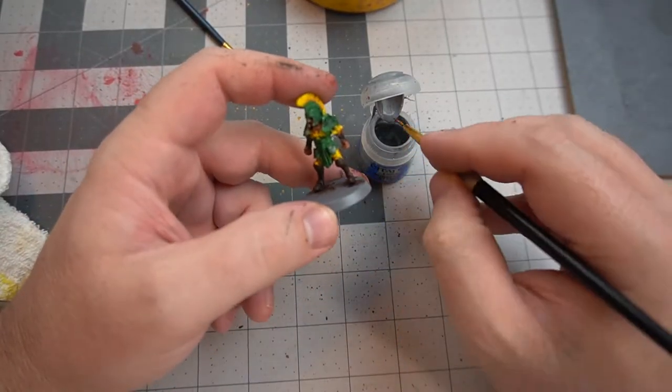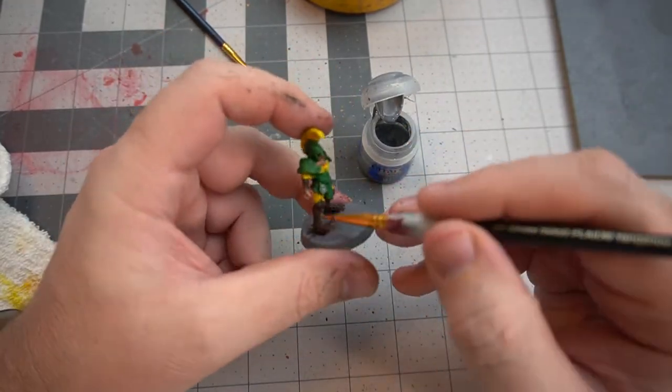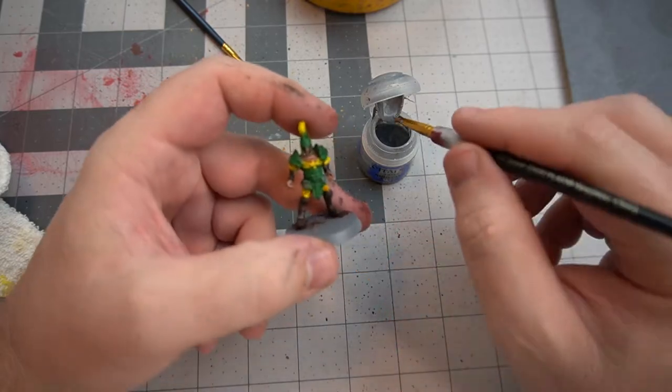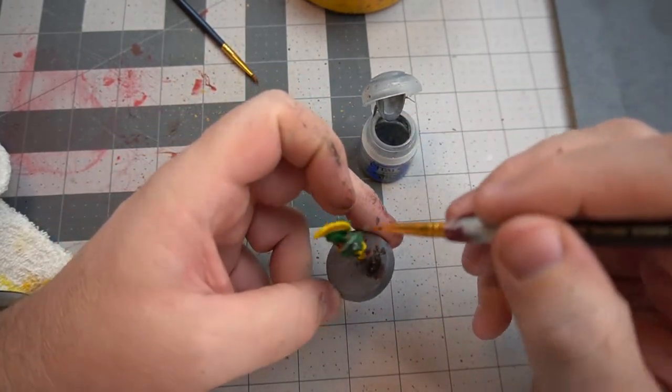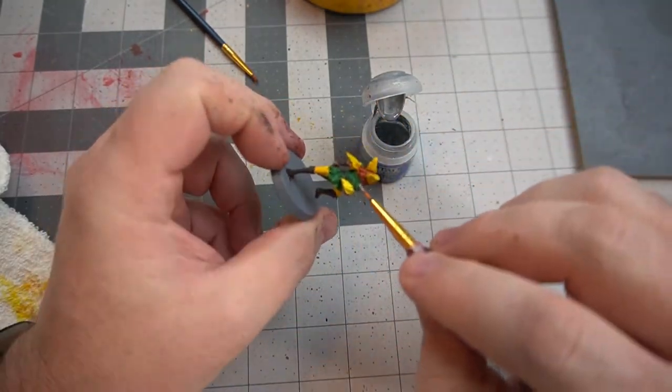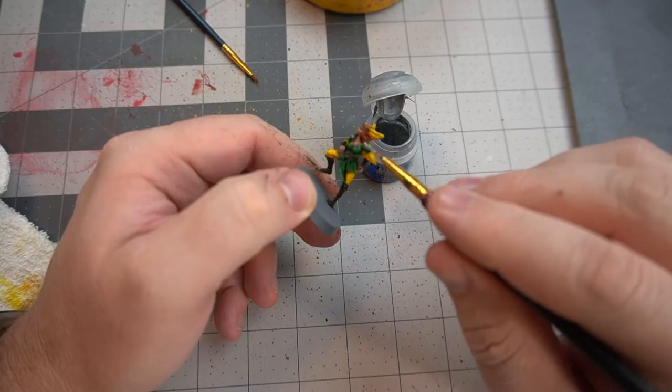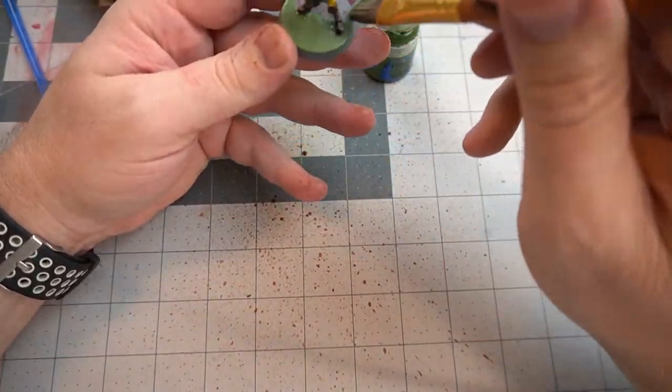I'm putting silver on some of the armored bits to bring them out with a little bit more detail. Getting ready to do the basing so I'm painting this part green.